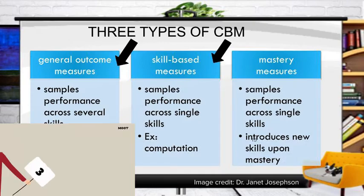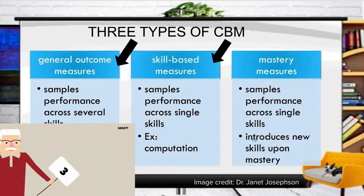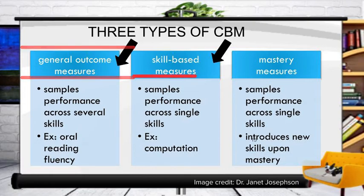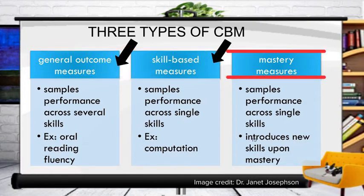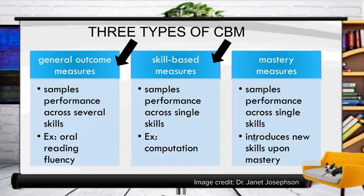We've got three types of CBM: general outcome measures, skill-based measures, and mastery measures. General outcome measures are samples of performance across several skills — for instance, oral reading fluency. Skill-based measures are sample performances across a single skill — for instance, computation. Mastery measures are also sample performances across single skills, but here we introduce new skills upon mastery.